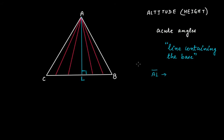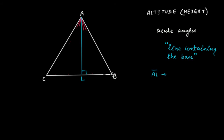Similarly, if I draw the same thing from vertex B onto side AC, which is opposite to vertex B — drawing an altitude from this vertex — let's say it meets at point M. This line segment BM is another altitude.